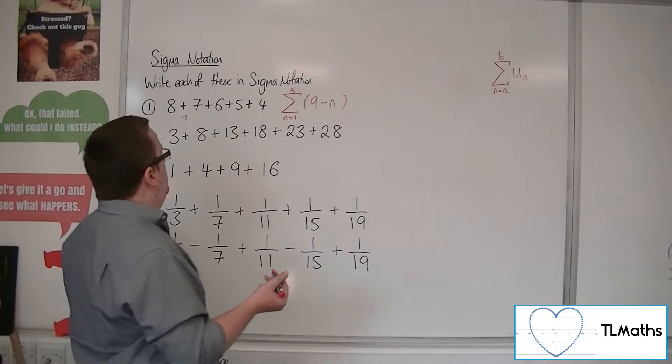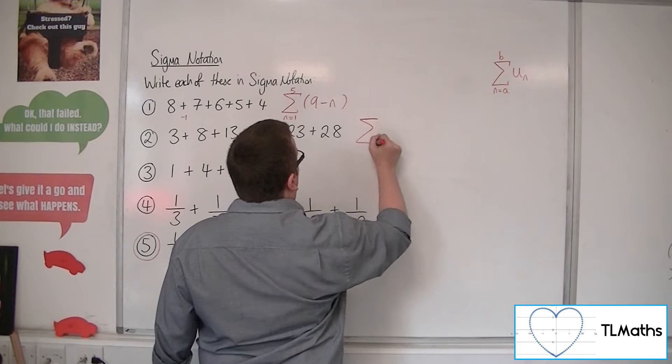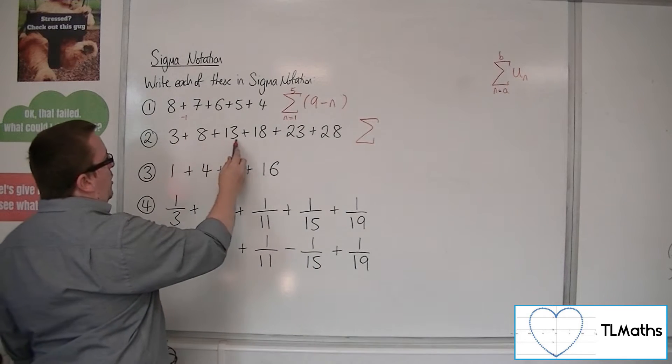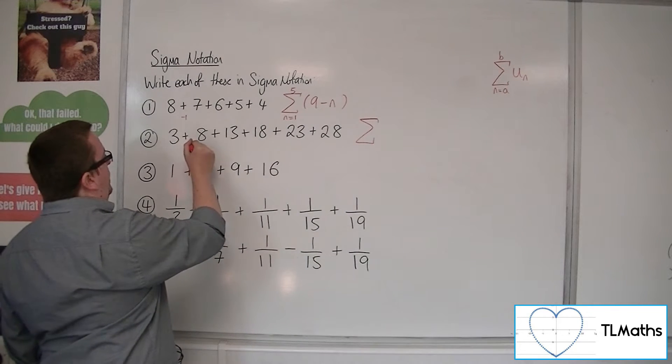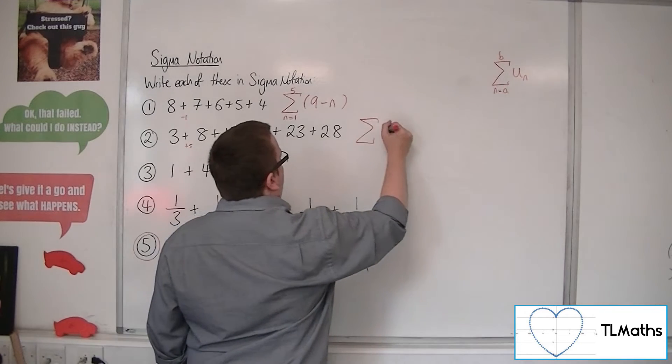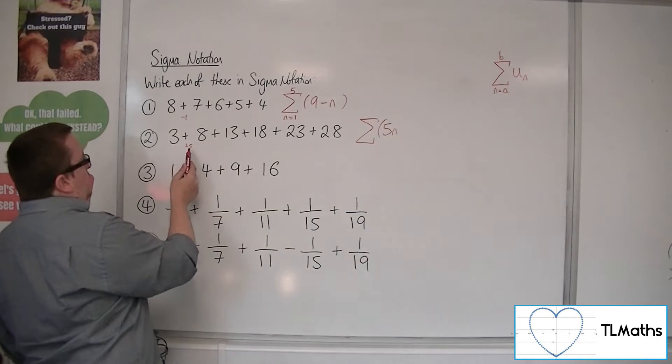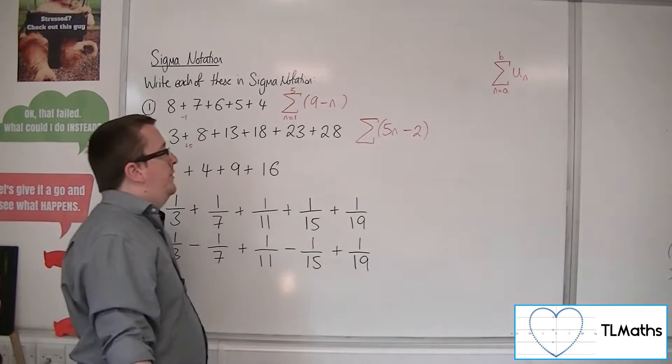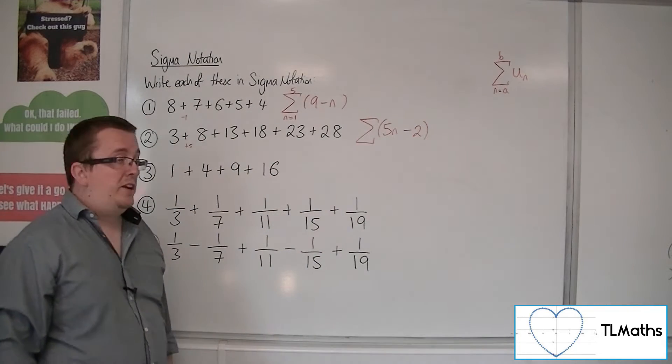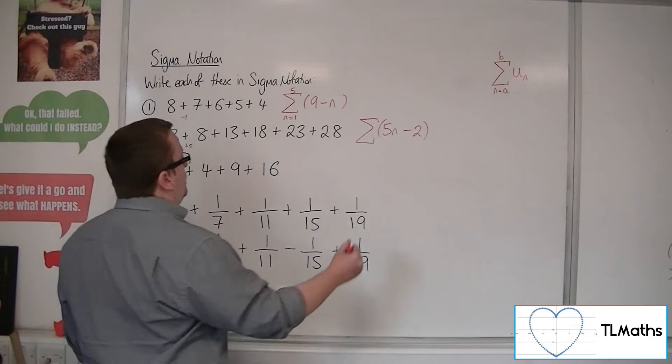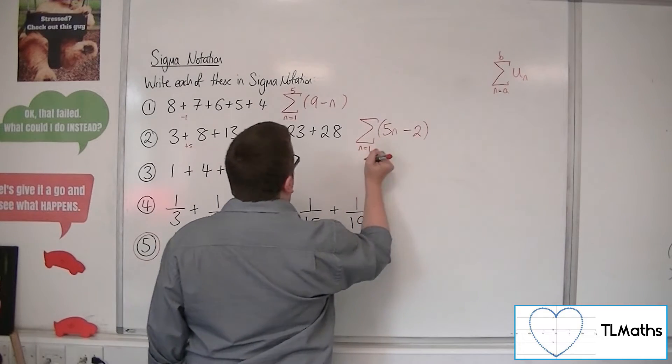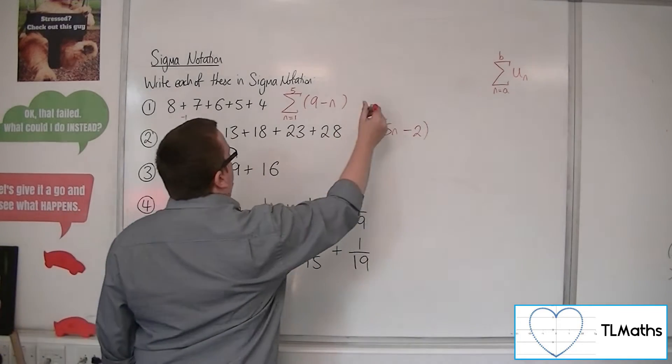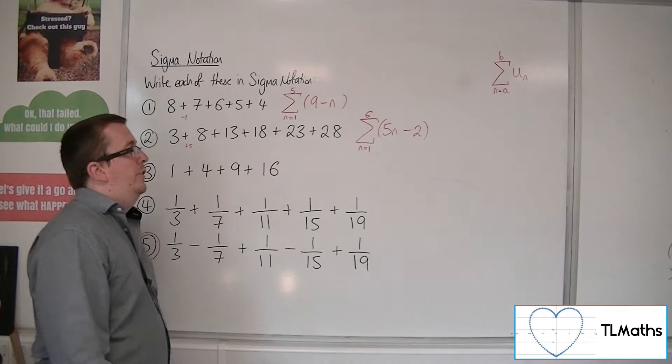Now for number 2, we want the nth term first. So we appear to be going up in 5s this time. So it'll be a 5n. And how do we get from 5 back to 3? We've got to subtract 2. So 5n minus 2 in front of the sigma. And we're going from the first term, n is 1, up to our 1, 2, 3, 4, 5, 6. So up to the 6th term.